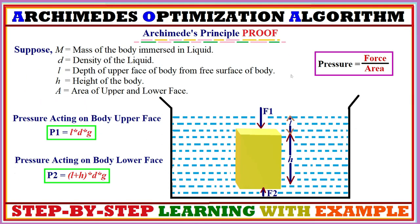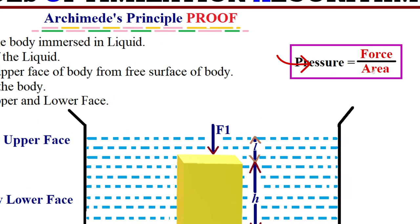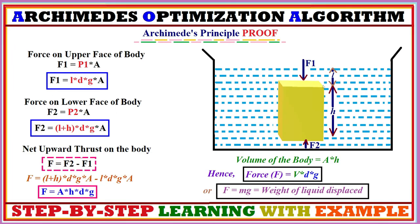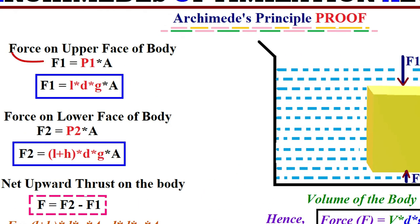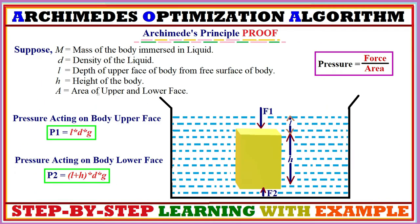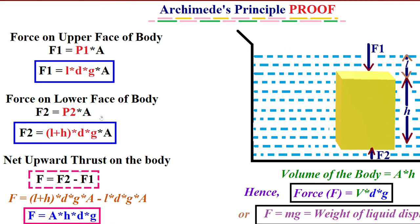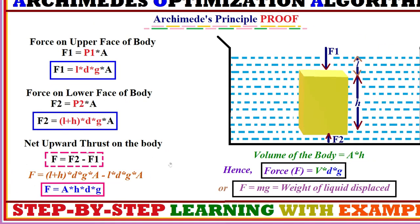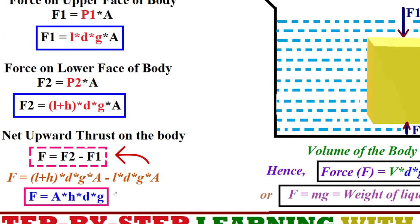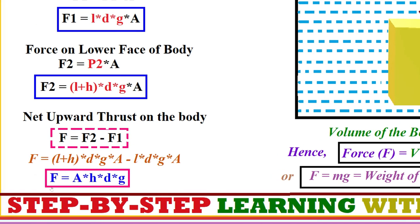Since pressure equals the normal force acting on a unit surface area, force equals pressure times area. So f1 = p1 × a, where p1 = l × d × g. The force on the lower face is f2 = p2 × a. The net force on the body is f2 minus f1, which gives us a × h × d × g.